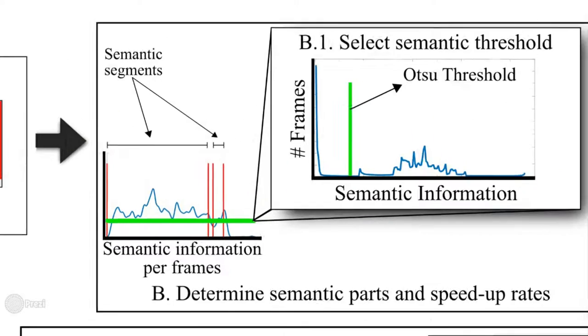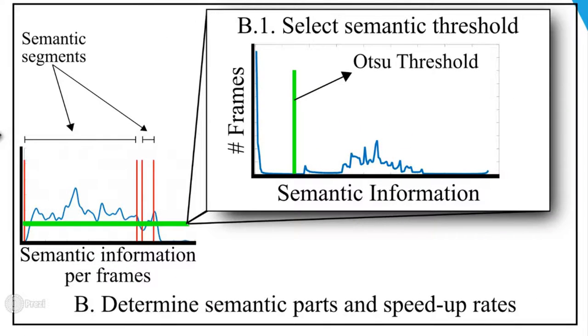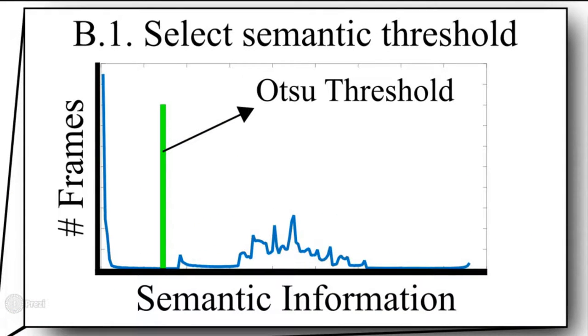Then we slice the video in order to create semantic and non-semantic segments. In order to define which are the relevant segments, the ODSU Threshold method is applied to the histogram of the semantic information.